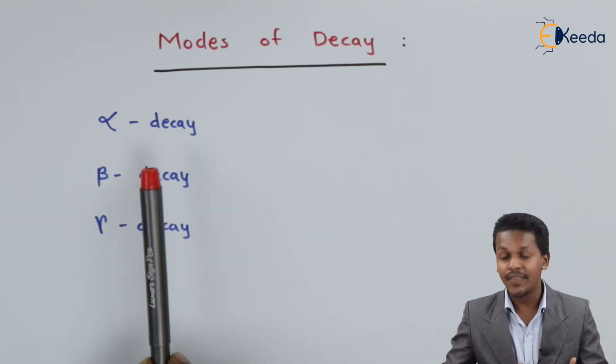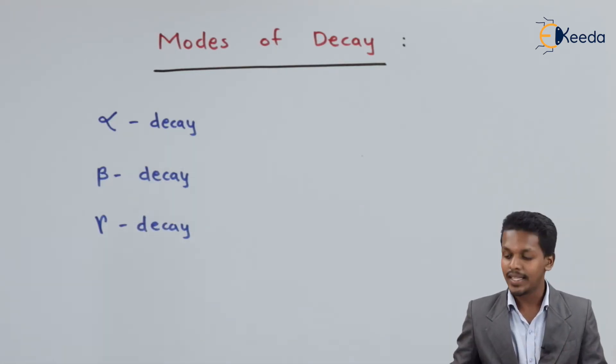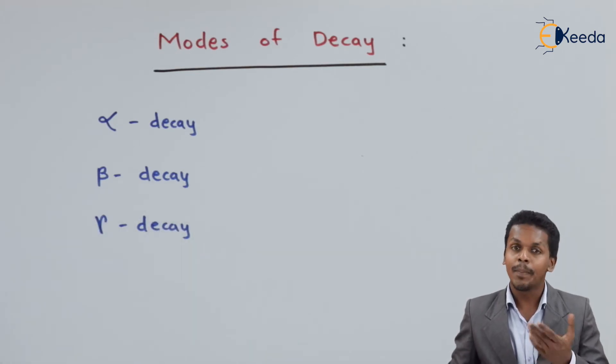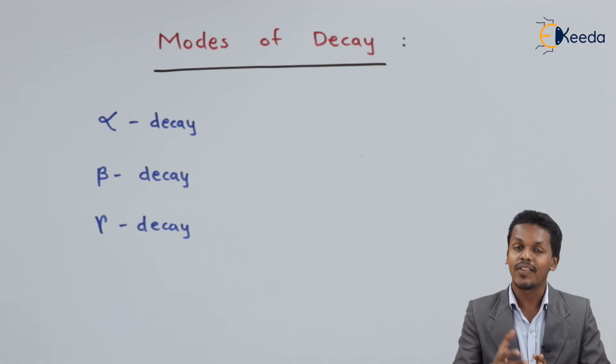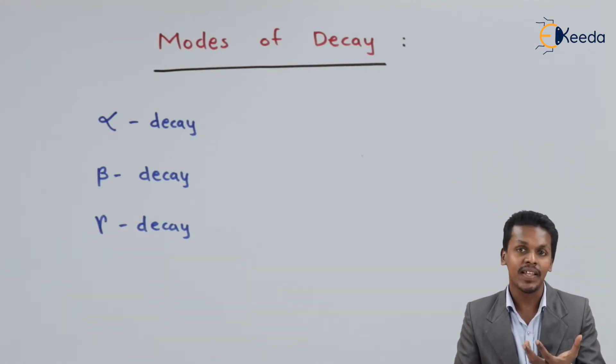Now let me talk about beta decay. In beta decay, beta particles are emitted from the radioactive element. In that case, the beta particles are a stream of electrons.